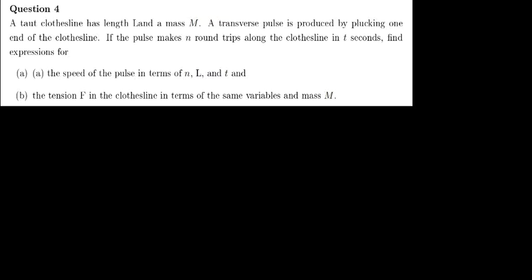I received this interesting question from a student who requested that I solve it. The question is: a taut string has a length L and a mass M. A transverse wave is produced by plucking one end of the string. If the wave makes N round trips along the string in T seconds, find the expression for part A, the speed of the wave in terms of N, L, and T, and part B, the tension F in the string in terms of the same variables and the mass.